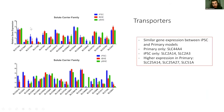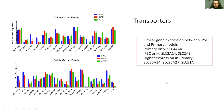Another family of transporters is the SLC, and these are also similar across the models — very similar. Briefly, the primary only expresses SLC44A4, and the IPSC expresses SLC2A14 and SLC2A3. Higher expression in the primary: SLC25A14, SLC25A27, and SLC51A.